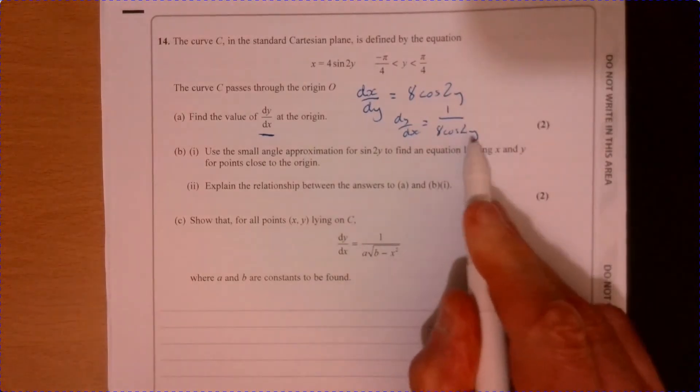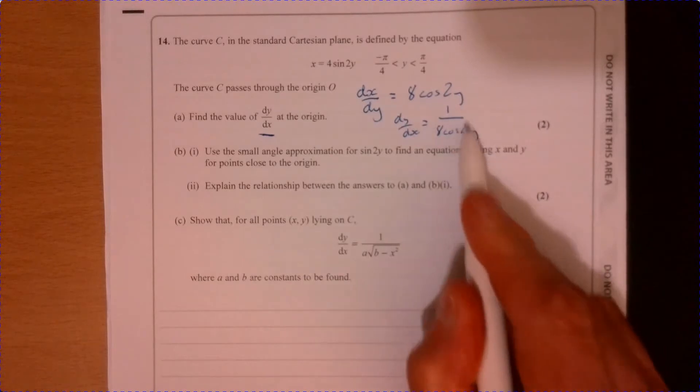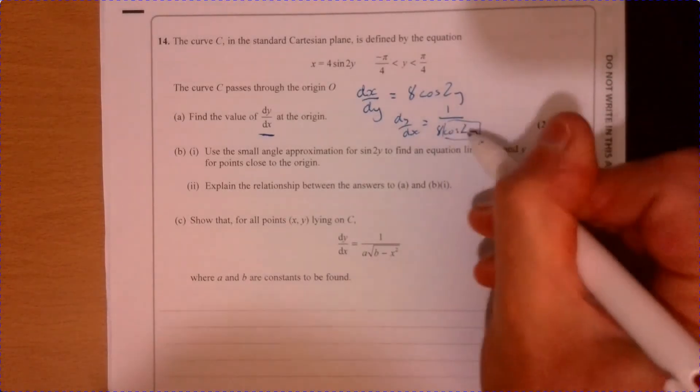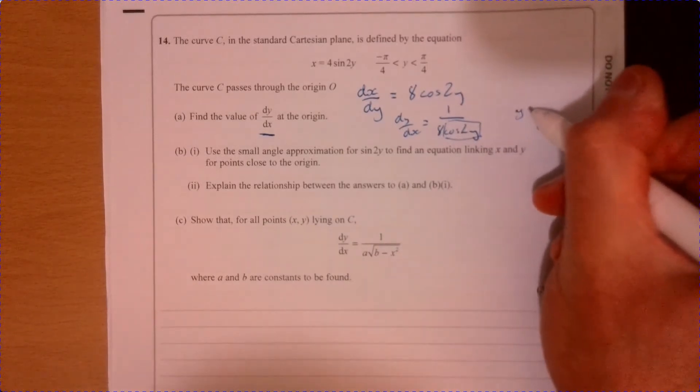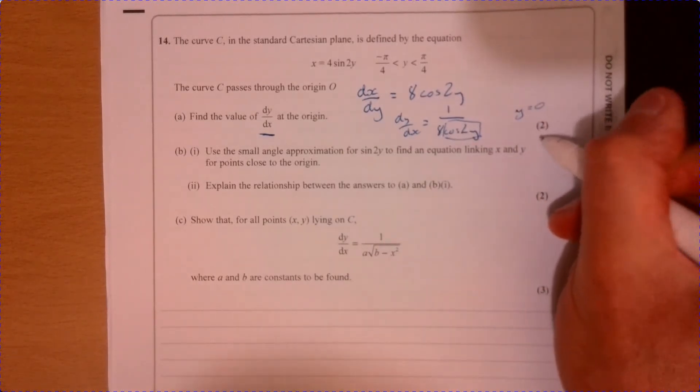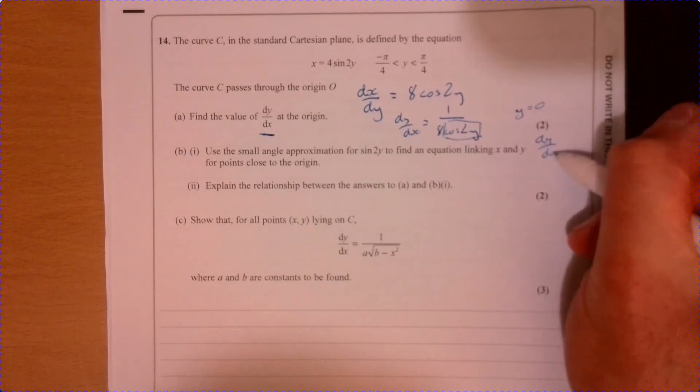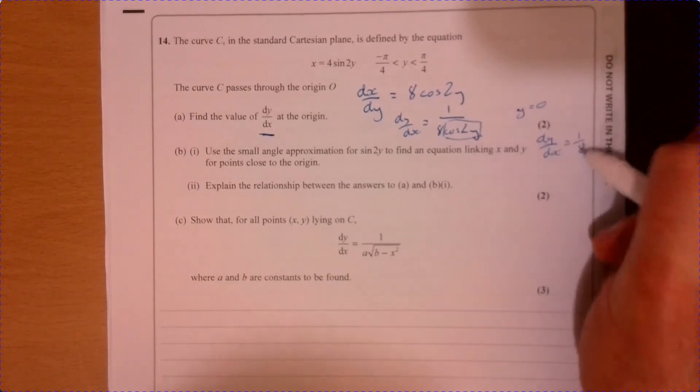So if I substitute 0 into this, then that's going to be, so cos 2y, that would be 1. So when y is 0, then dy over dx must equal an eighth.